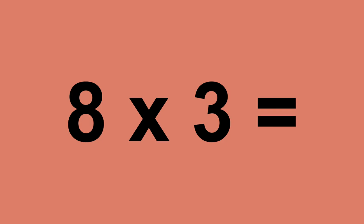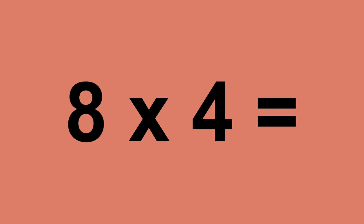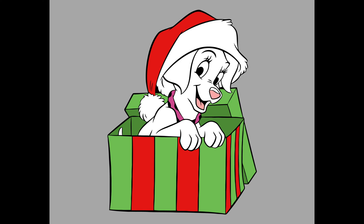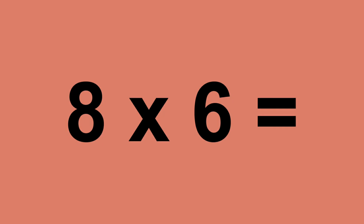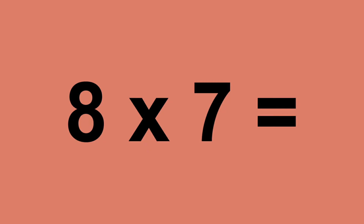Eight times zero equals zero. Eight times one equals eight. Eight times two equals sixteen. Eight times three equals twenty-four. Eight times four equals thirty-two. Eight times five equals forty. Eight times six equals forty-eight. Eight times seven equals fifty-six.